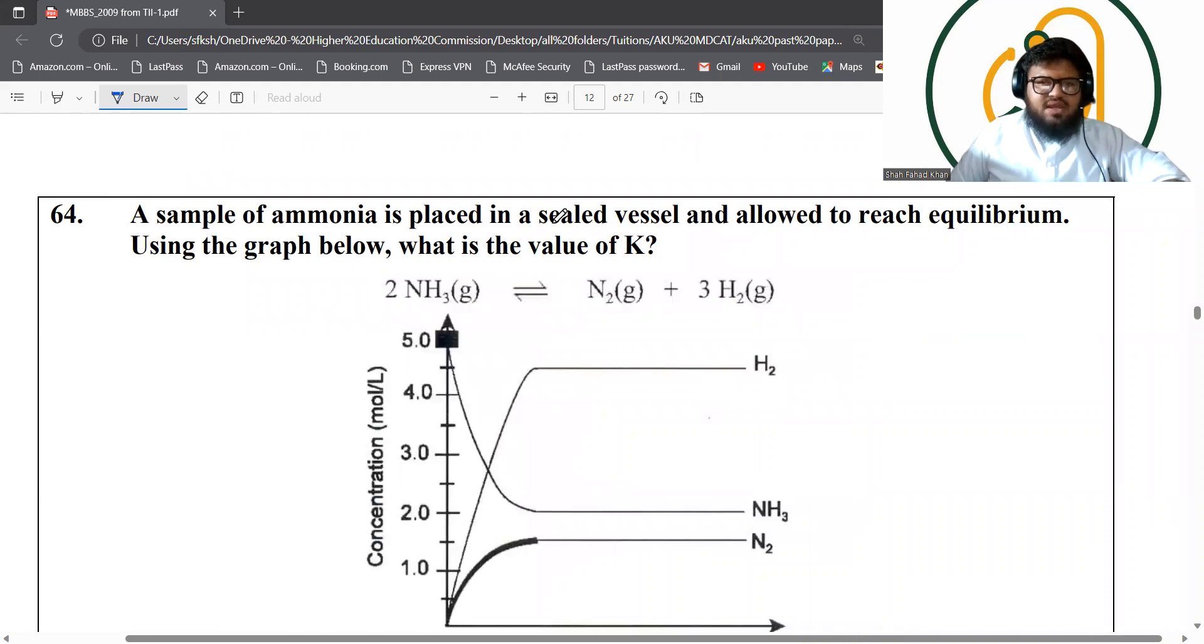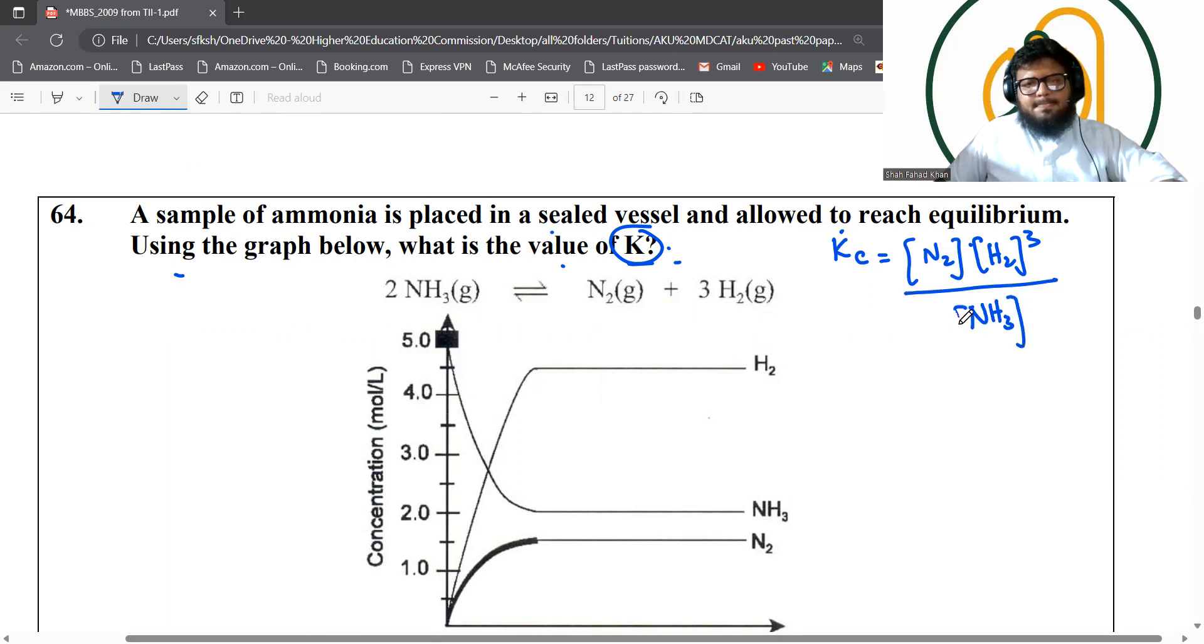A sample of ammonia is placed in a sealed vessel and allowed to reach equilibrium using this graph. What's the value of K? K is a concentration constant, equilibrium constant of concentration. And you can calculate it using product to the power of its moles. So nitrogen to the power of its moles into hydrogen to the power of its moles divided by reactants to the power of their moles.